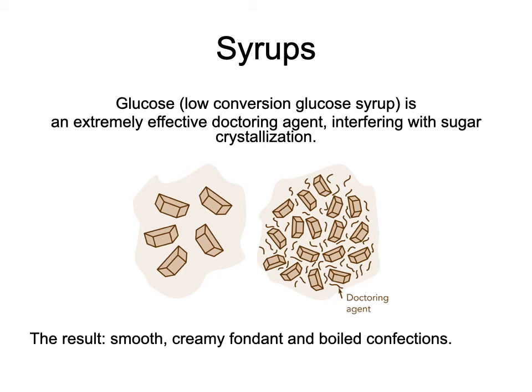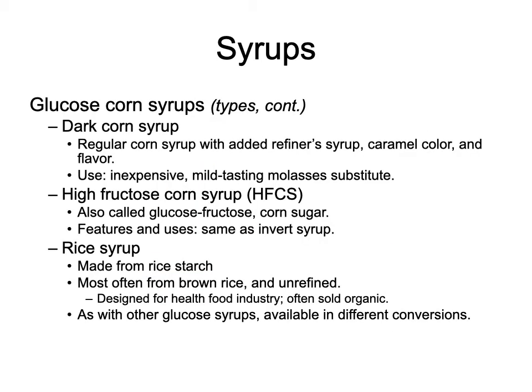Medium-conversion corn syrup is used in candies and confections — it's quite thick, only a little sweet, unlikely to crystallize, and gives white smooth shiny candies. Low-conversion corn syrup is extremely effective at keeping sugars from crystallizing — acting as a doctoring agent, physically interfering with sugars trying to find each other and crystallize, resulting in something very smooth with almost imperceptible texture. Dark corn syrup has a bit of refiner's syrup and sometimes caramel coloring — it has a mild molasses flavor and is used in pecan pie and certain cookies.